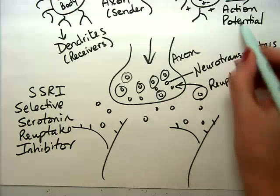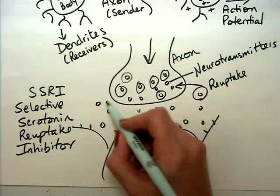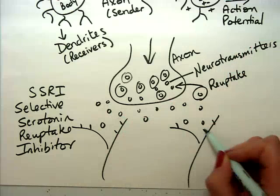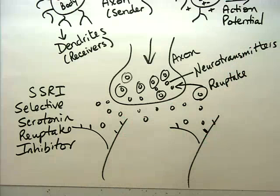And so when the action potential is sparked, it releases the chemical into the gap here, into the synapse. And then the receptor sites, which are here, are going to soak up the chemical. And that's how the message gets to where it needs to be.